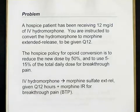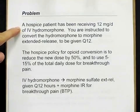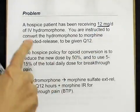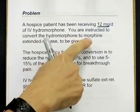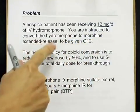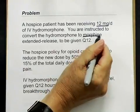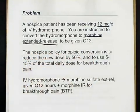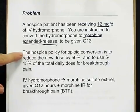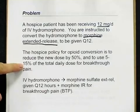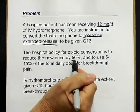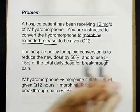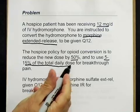Here's the problem. We're going to convert a hospice patient who has been receiving 12 milligrams a day of IV hydromorphone — that's Dilaudid — to morphine extended release, the generic for MS Contin, given Q12, a typical dosing regimen. The hospice policy for opioid conversion is to reduce the new dose by 50%, and to use 5 to 15% of the total daily dose for breakthrough pain.